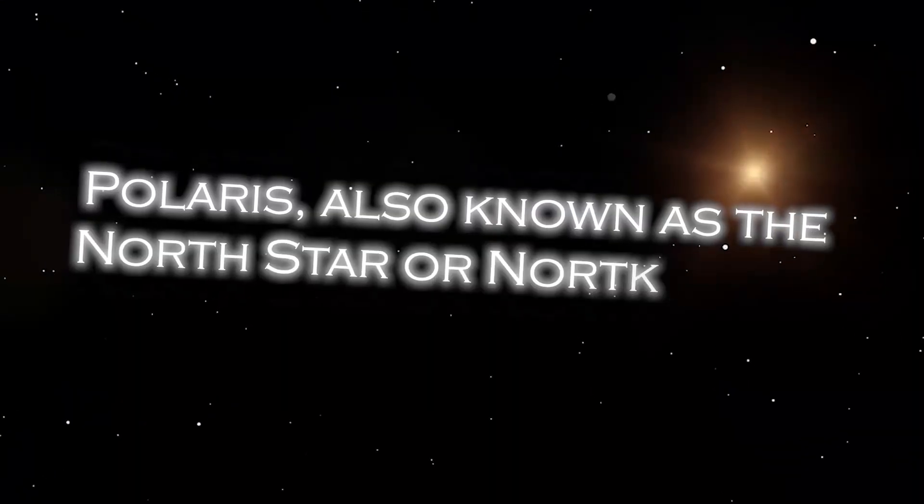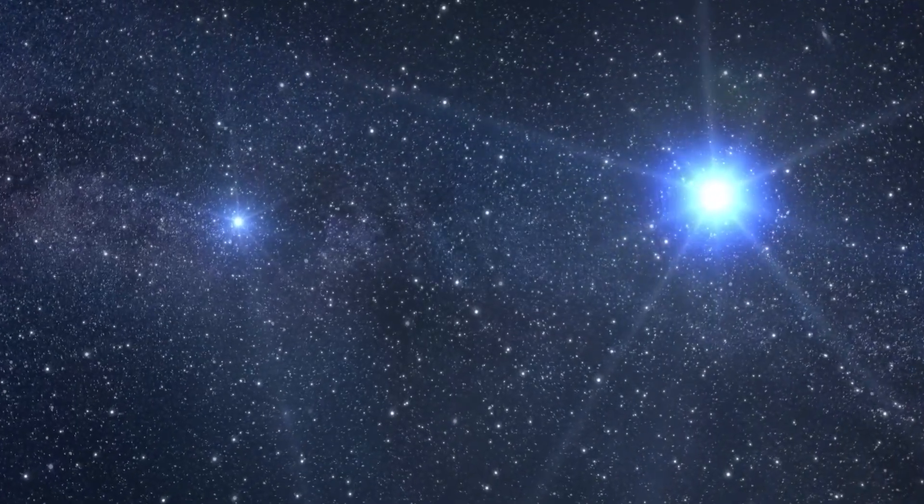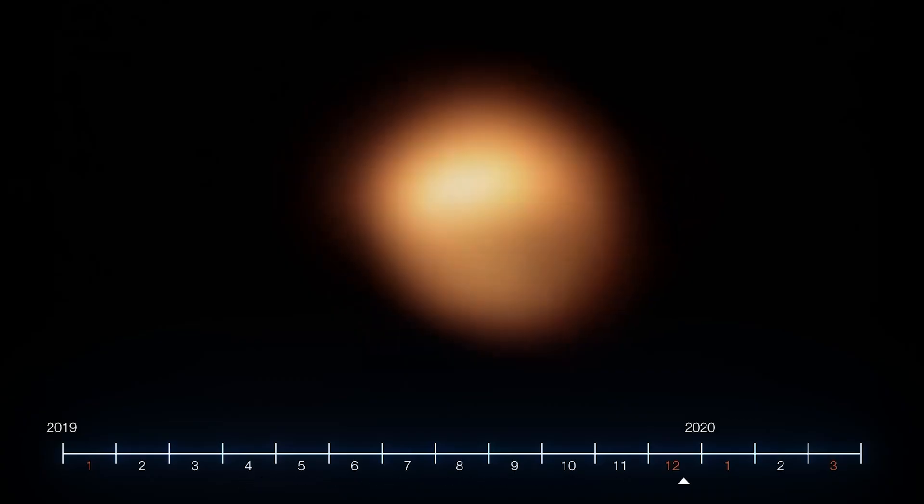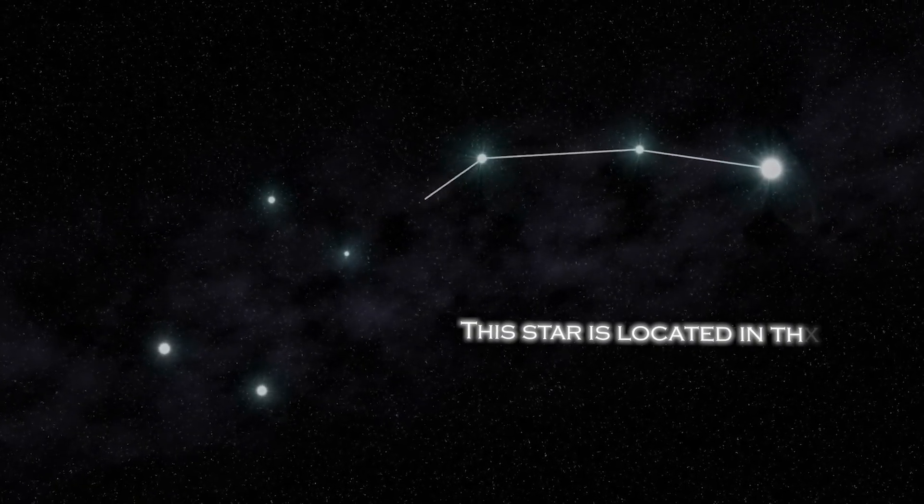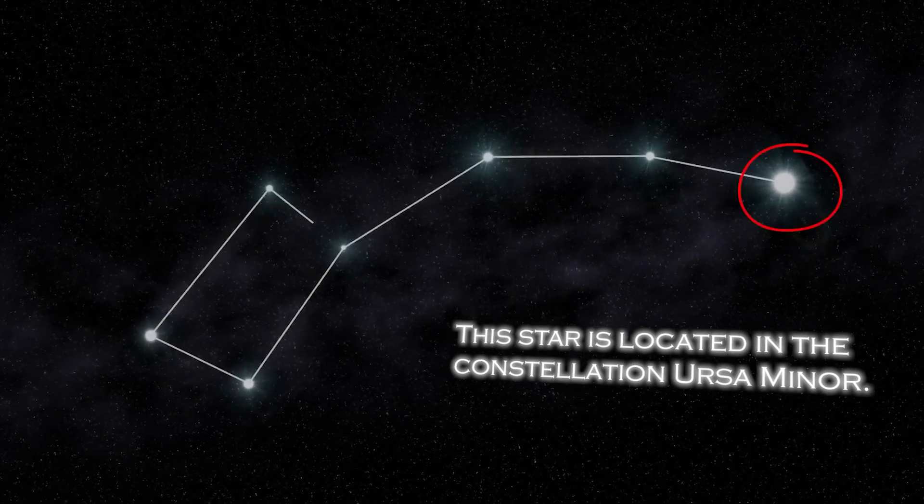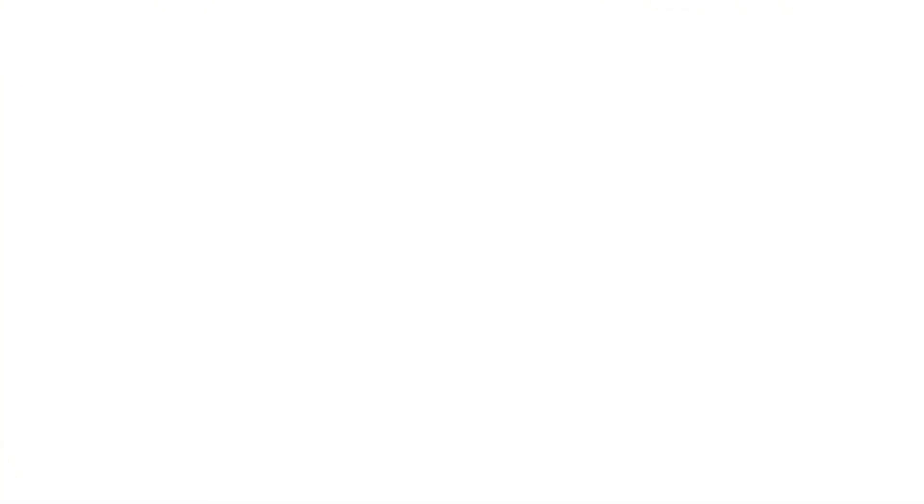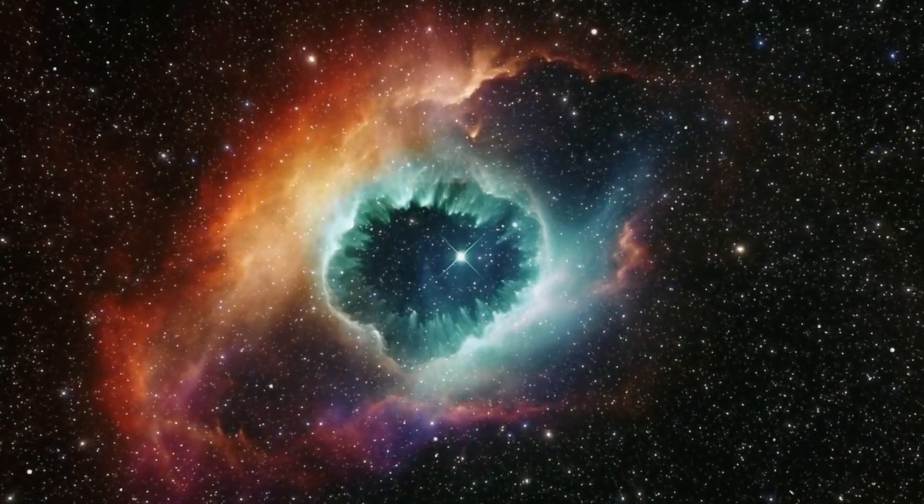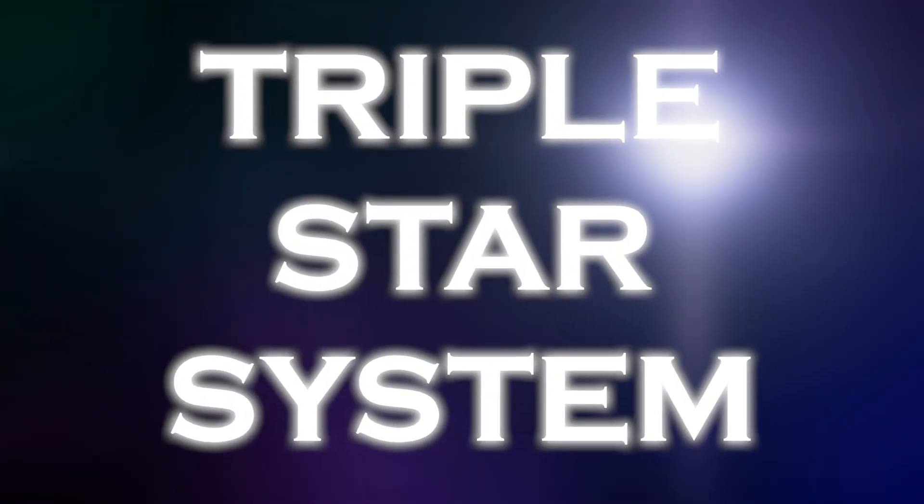Polaris, also known as the North Star, occupies a special position in the sky because of its proximity to the celestial North Pole. It is almost directly over the Earth's North Pole, which gives the illusion that it remains static in the northern sky. The star is located in the constellation Ursa Minor. Polaris is a star of moderate brightness that stands out as a yellow-white supergiant of considerable dimension compared to our Sun. Despite its appearance as a lone star, it is actually part of a rather complex triple star system.